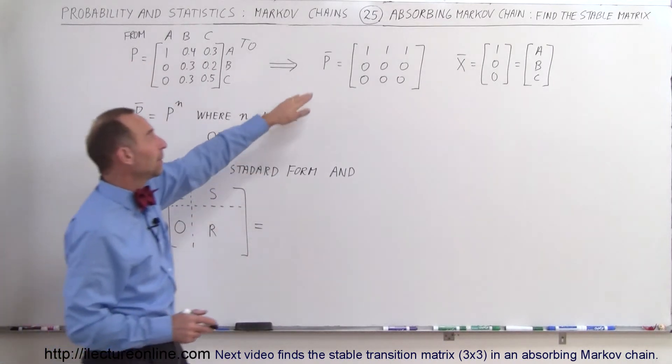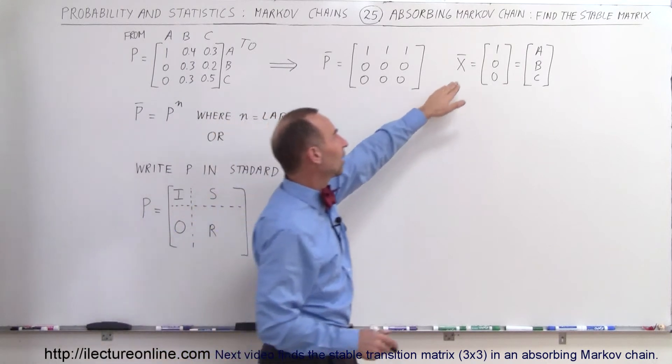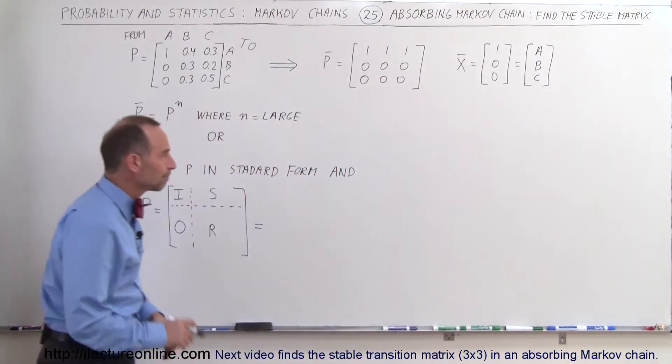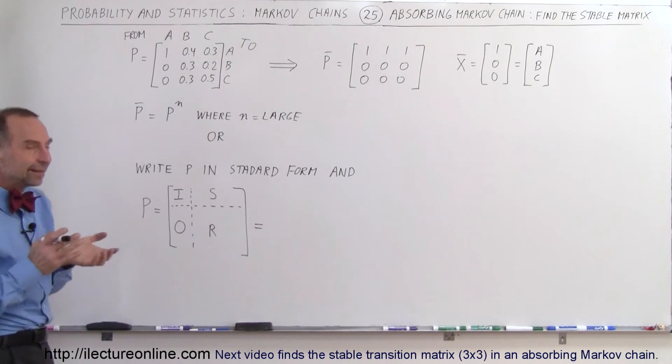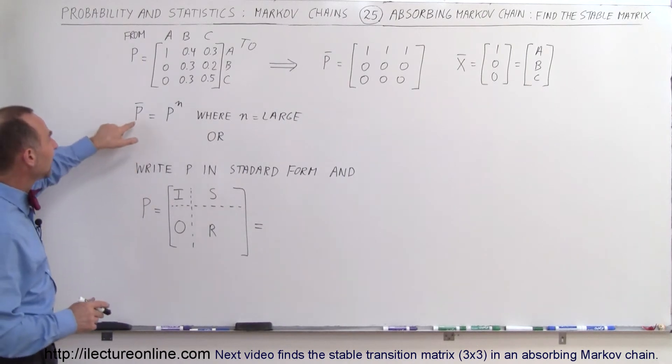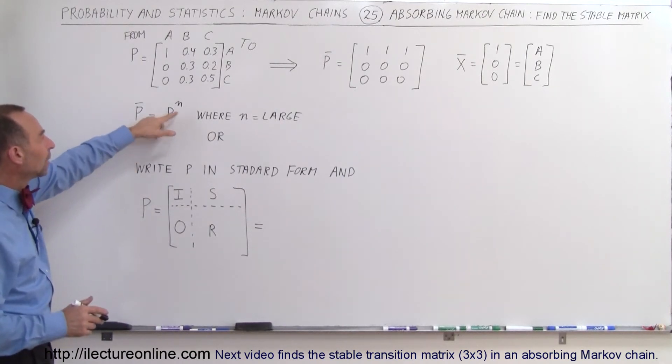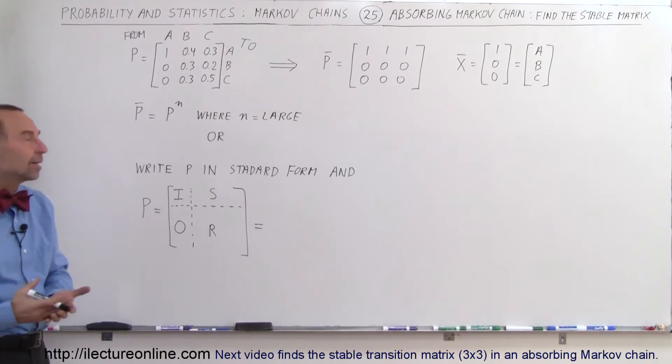So that the stable matrix will look like this and the stable distribution matrix will look like this.